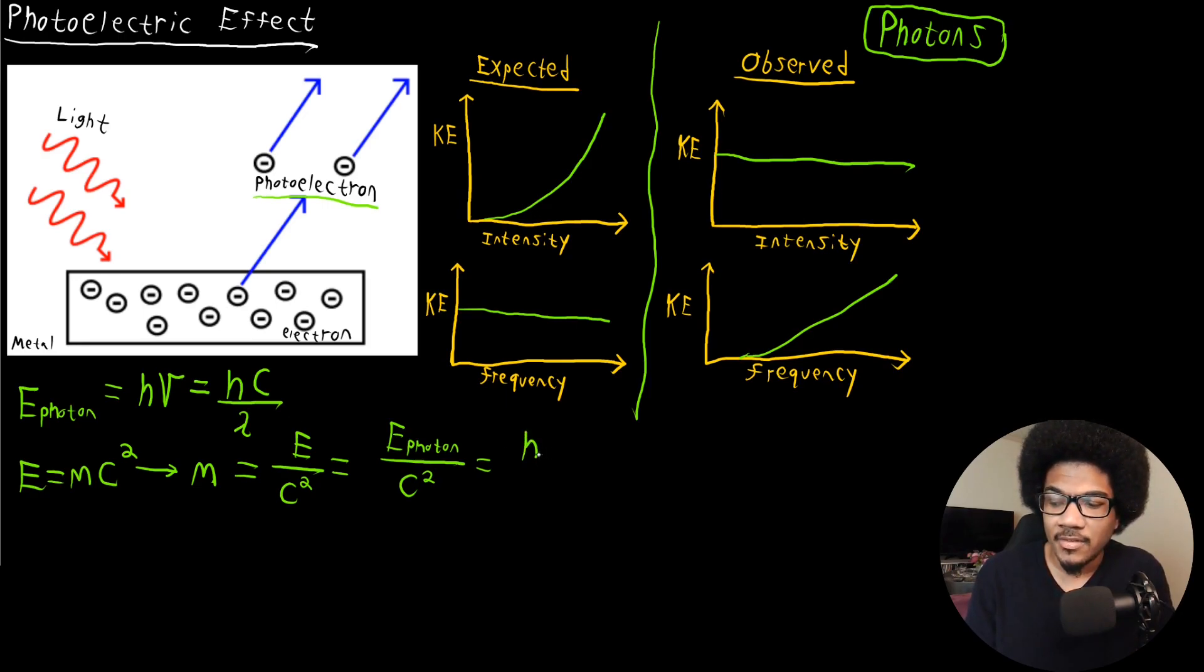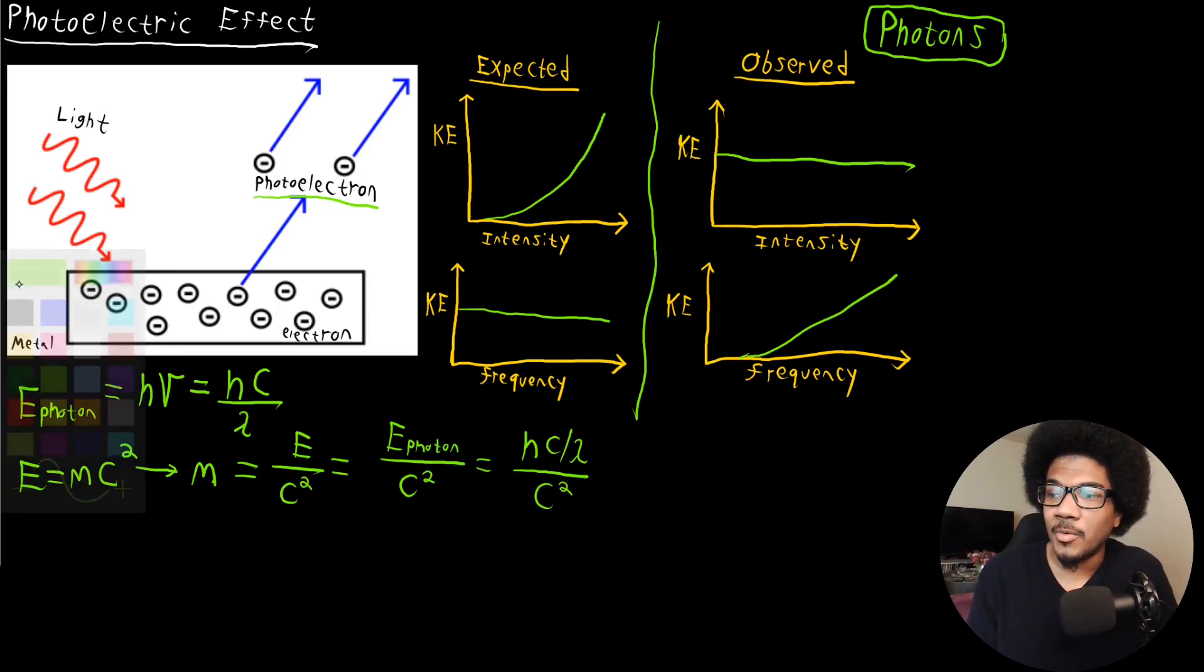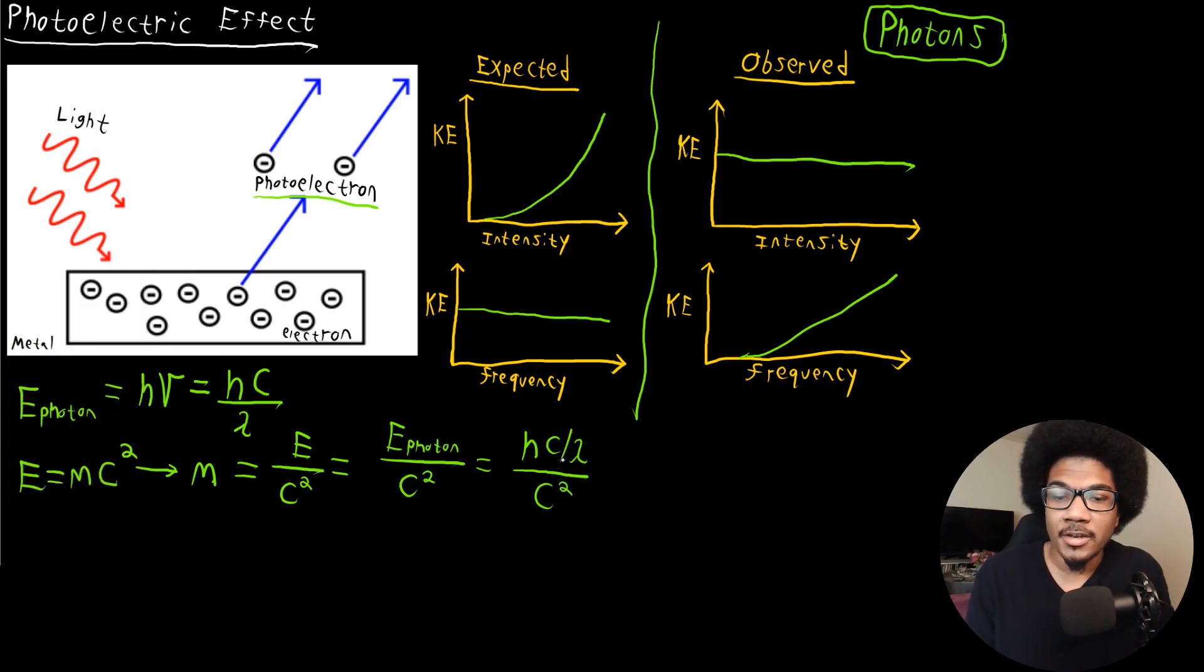So we can have hC over lambda over C squared. So one of our speed of light constants here will cancel out with the one in the denominator. So we get that one cancel.